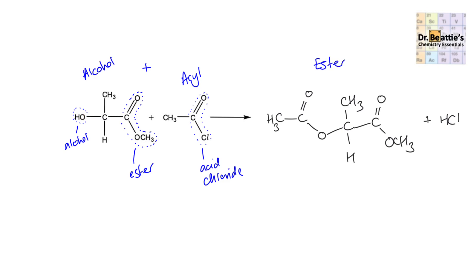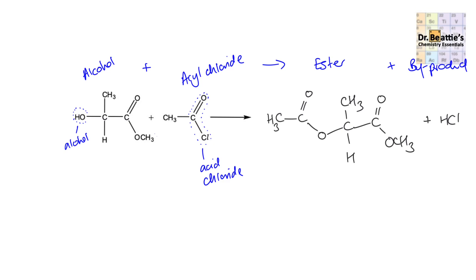It's only the alcohol that's going to combine with the acyl. These two react together to form an ester. And because the acyl is an acyl chloride, the product is hydrochloric acid. Sometimes when you're dealing with bifunctional groups, you've just got to find which of those functional groups is the one that would actually react with the functional group on the other molecule. In this case, the alcohol reacts with the acyl chloride.